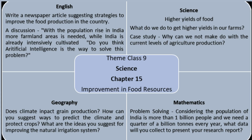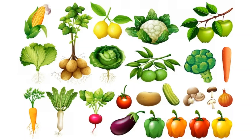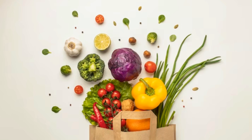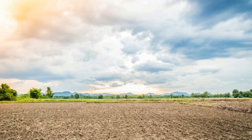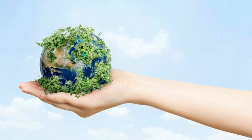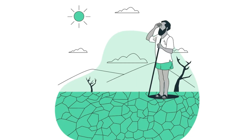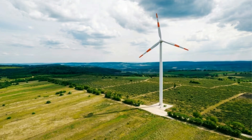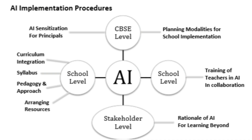In the science subject, there are many examples through which we can integrate AI and solve day-to-day problems — for example, how to increase the yield of food in farms. The teacher can tell students various ways to increase agricultural production. In geography, topics like how climate impacts agricultural production, how to predict climate and protect crops, and ideas to improve natural irrigation systems can all be explored using AI.